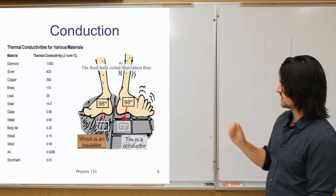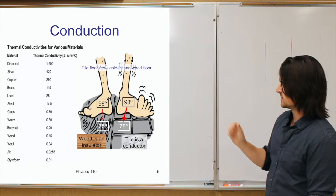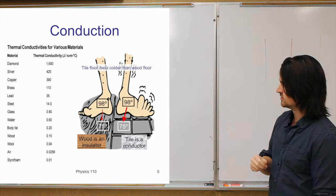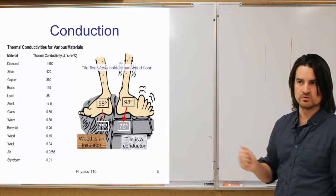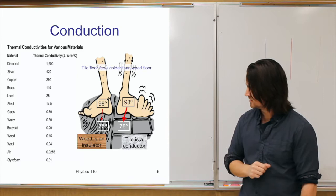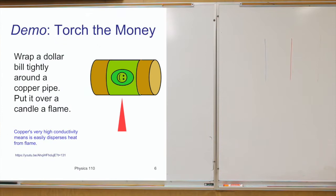Things like body fat, wood, wool, and air have low thermal conductivity. Air has a very low thermal conductivity, meaning it's a very poor conductor or a very good insulator — it does not allow heat to flow very easily at all. Styrofoam is even better as an insulator.